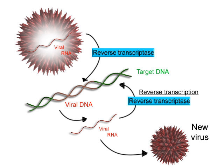Transcription is the first step of gene expression, in which a particular segment of DNA is copied into RNA by the enzyme RNA polymerase. Both DNA and RNA are nucleic acids, which use base pairs of nucleotides as a complementary language. During transcription, a DNA sequence is read by an RNA polymerase, which produces a complementary, anti-parallel RNA strand called a primary transcript.